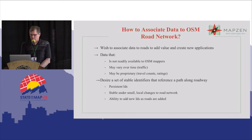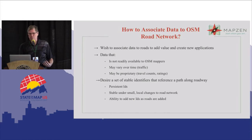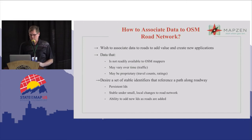To solve this problem, we're creating a set of stable identifiers to reference a path along a roadway. We want these identifiers to be persistent and stable so that you can make small local edits to OpenStreetMap data and the IDs still refer to the same section of roadway. And we want the system to be extensible so that as OSM adds new roads, new IDs or new linear referencing segments can be added.